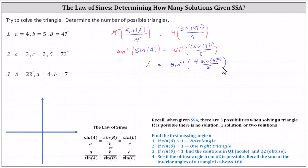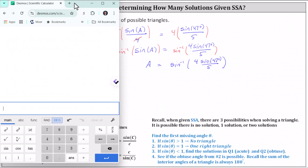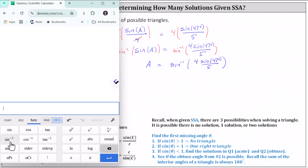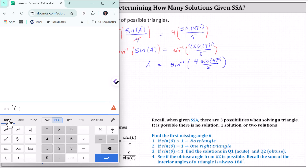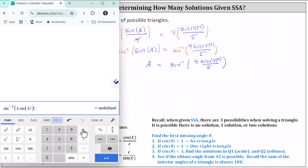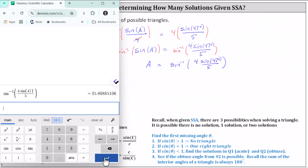And now we go to the calculator. Whichever calculator is used, it's important to make sure that it is in degree mode. This is the Desmos scientific calculator. For inverse sine, click Functions, then inverse sine, back to the main tab. Enter four sine 47, close parenthesis, divided by five, and press enter. Rounding to one decimal place, we have A is approximately 35.8 degrees.